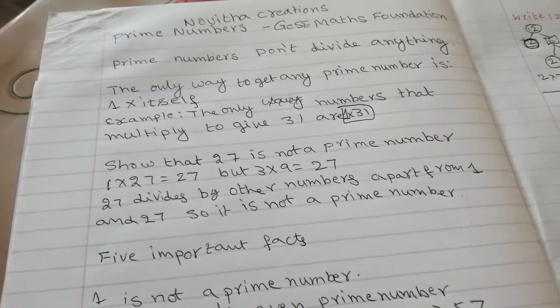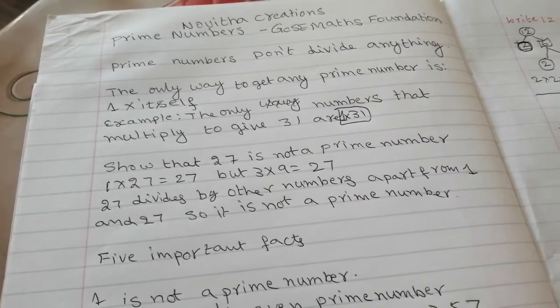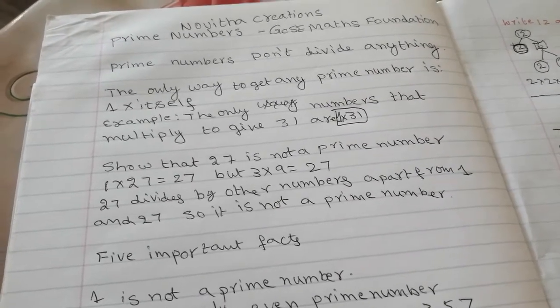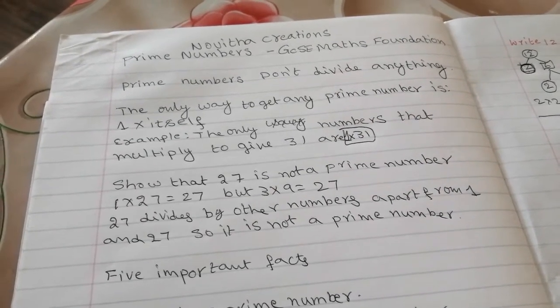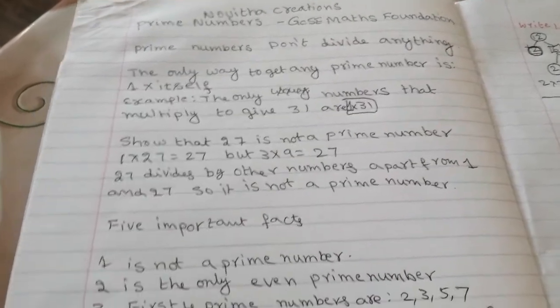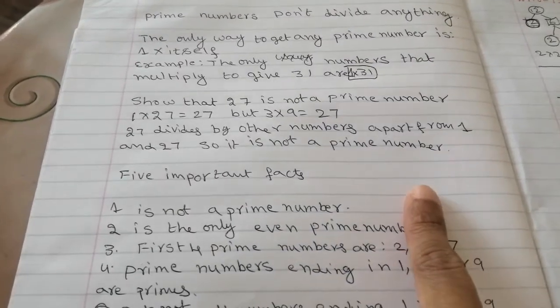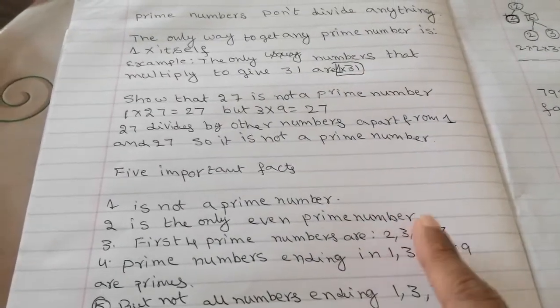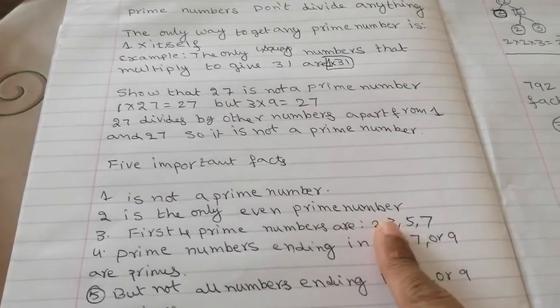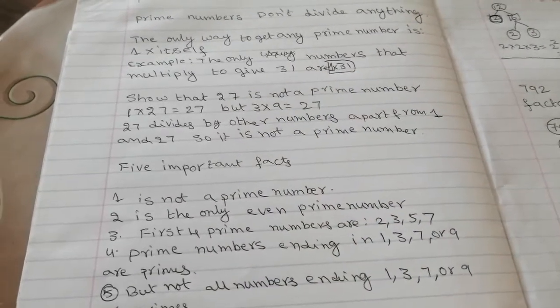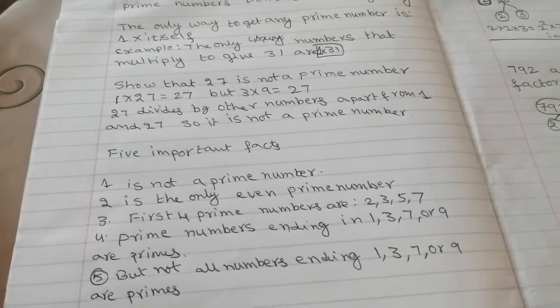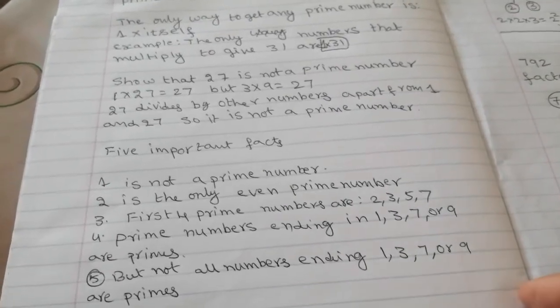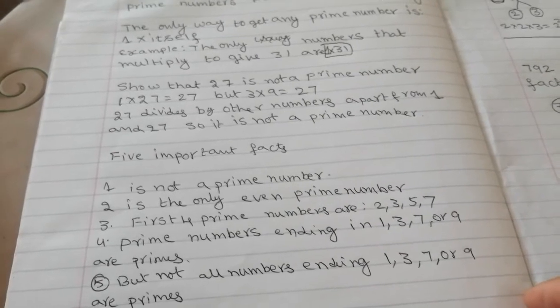We know that a prime number which is times itself with 1 only. Five important facts about prime numbers. 1 is not a prime number. So many people have confusion that they think 1 is prime number but it isn't. 2 is the only even prime number.